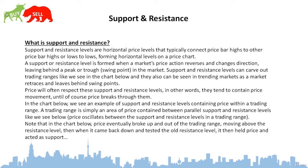Support and resistance levels are horizontal price levels that typically connect price bar highs to other price bar highs, or lows to lows, forming horizontal levels on a price chart. A support or resistance level is formed when a market's price action reverses and changes direction, leaving behind a peak or a swing point in the market.